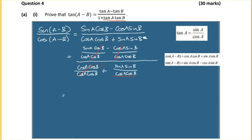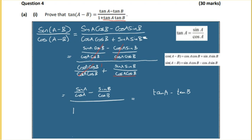After the cancellations, the numerator gives sin(a)/cos(a) - sin(b)/cos(b), which is tan(a) - tan(b). And the denominator gives 1 + sin(a)sin(b) / cos(a)cos(b), which is 1 + tan(a)tan(b). That's the identity proved.